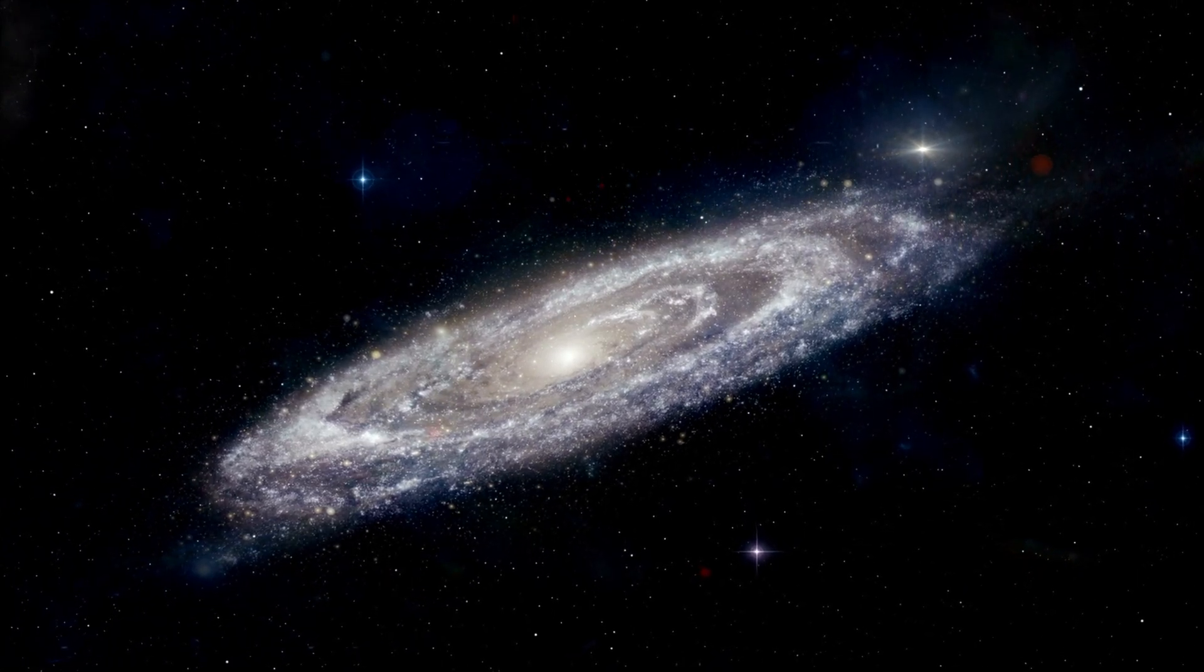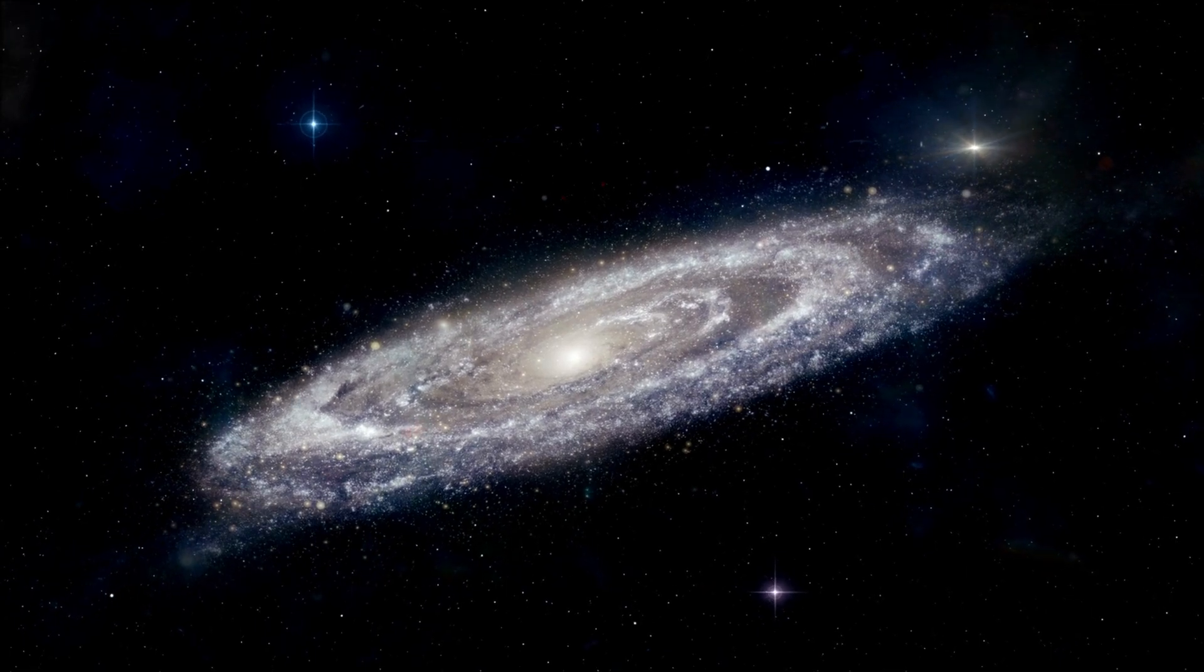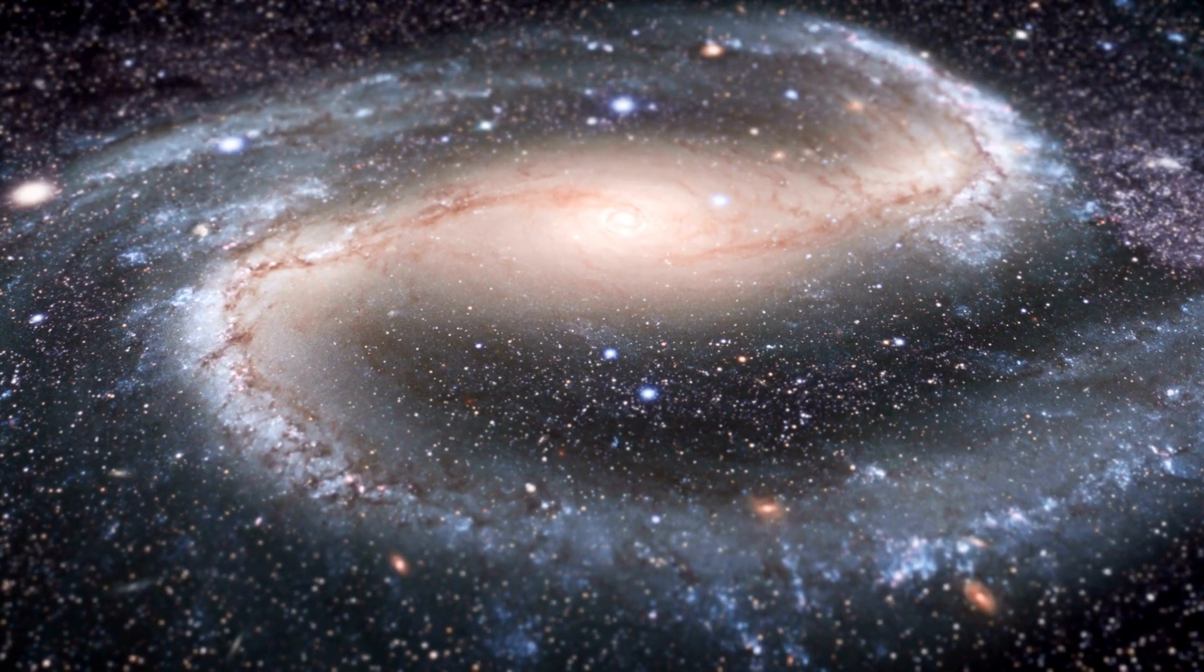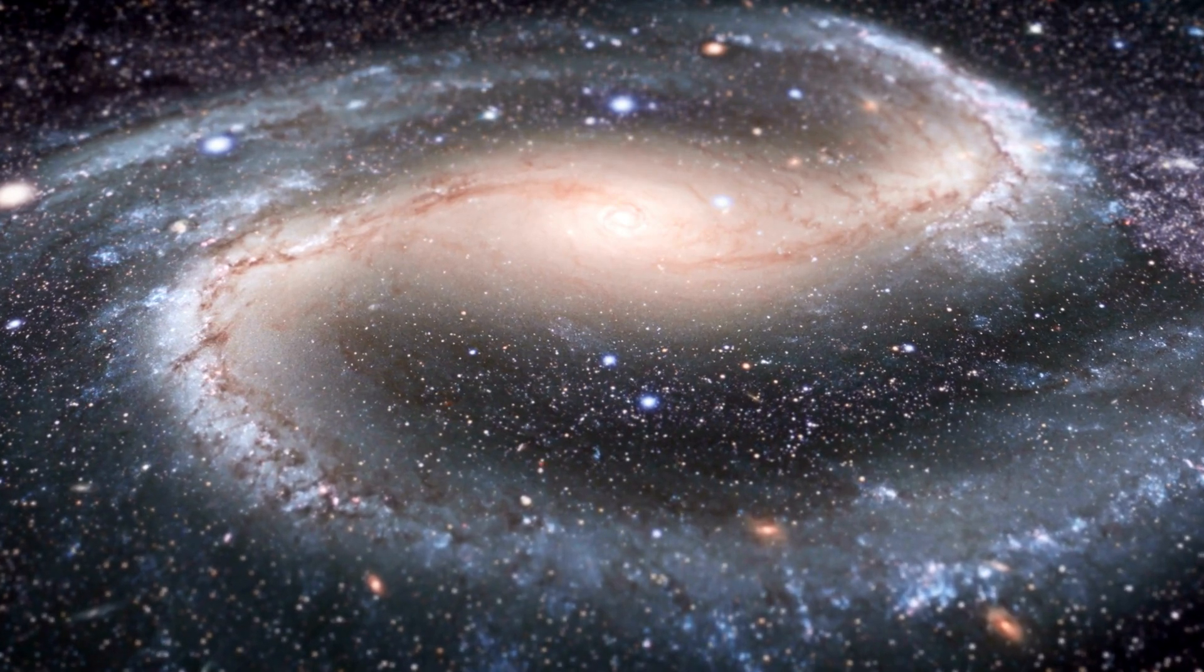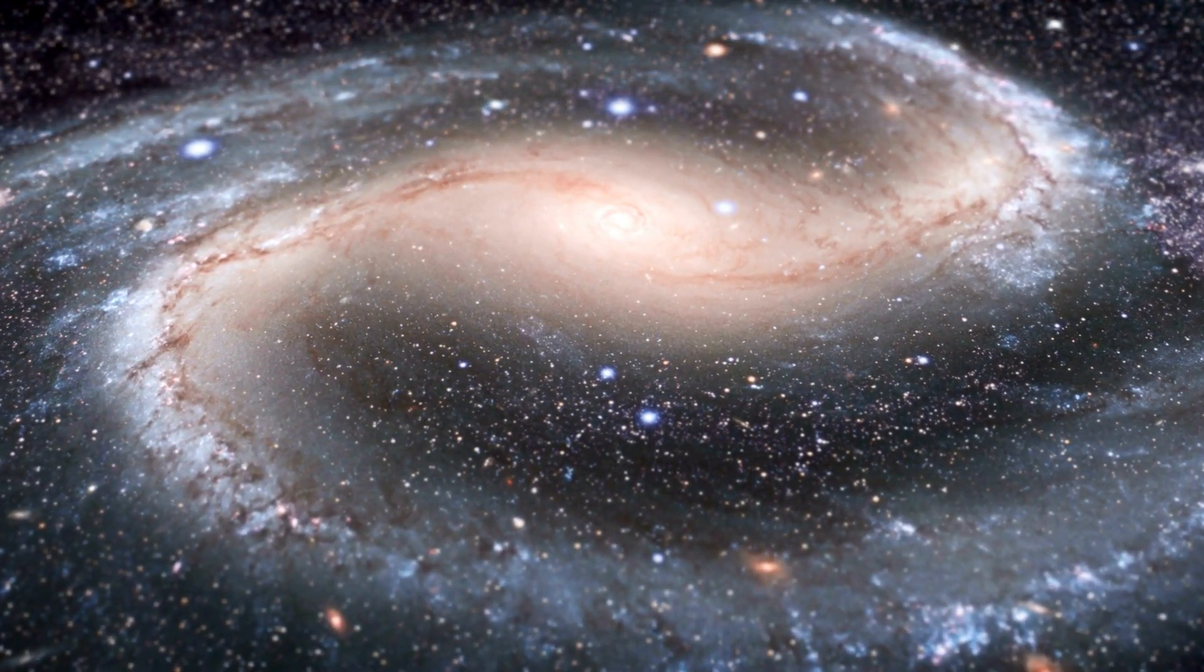Galaxies are a diverse group, but astronomers classify them into a few categories based on the features they share. The Milky Way is one of the most common types of large galaxies in the universe, falling into the category of spiral galaxies.